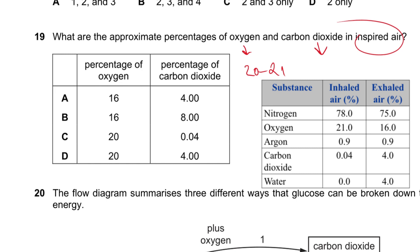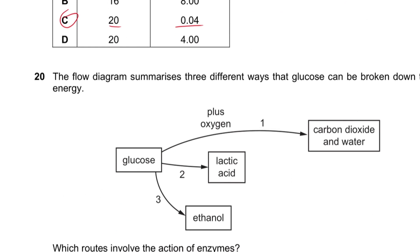Question 19: What are the approximate percentages of oxygen and carbon dioxide in inspired air? Oxygen is 20–21%, carbon dioxide is 0.04%. Answer is C.